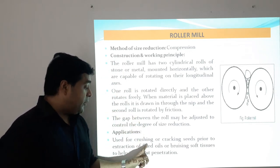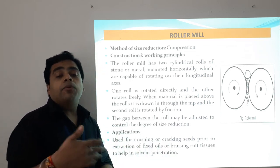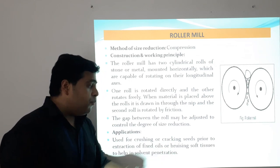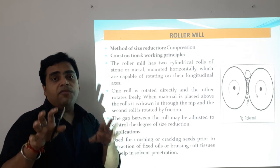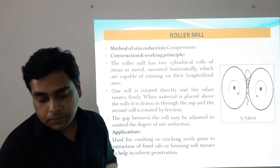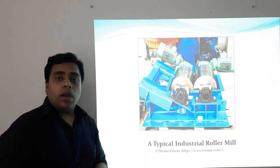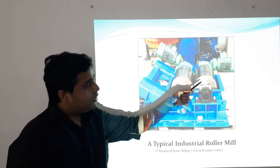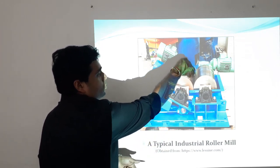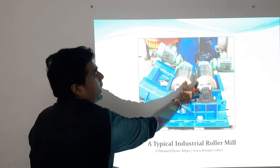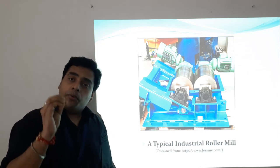The roller mill is used particularly for crushing of seeds prior to obtaining fixed oils, and for bruising of soft tissues to help in solvent penetration, particularly for plant and animal parts. In a typical industrial roller mill, the two rollers are visible, the feed is introduced from the top between the rollers, and the gap can be adjusted depending on the feed and the nature of the product required.